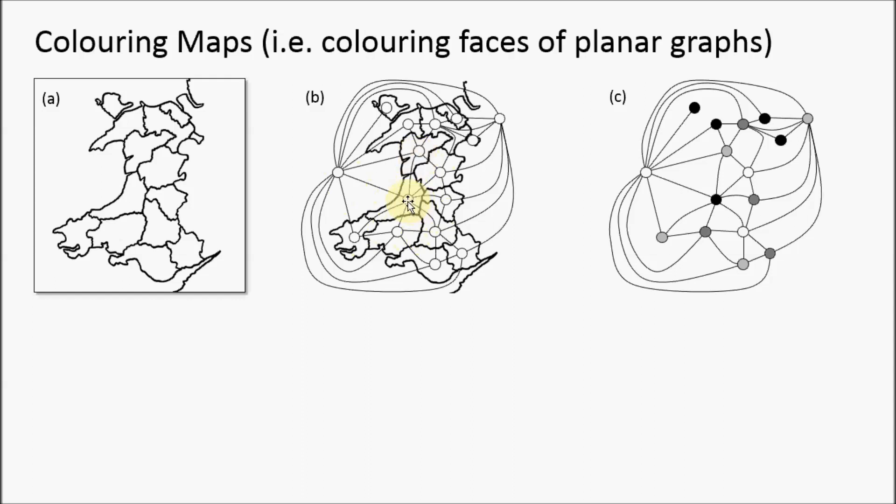If we now take the map away, we're left with what is known as a planar graph. What we're seeking to show is that a planar graph can be four colored. If that's always true, then maps can always be four colored as well.